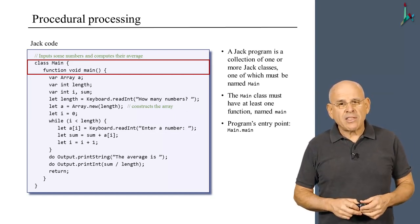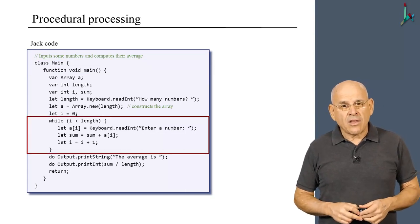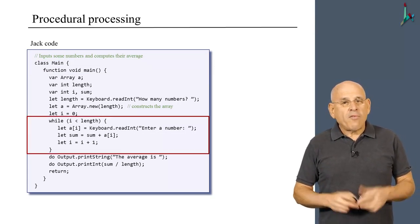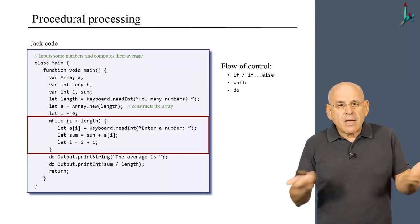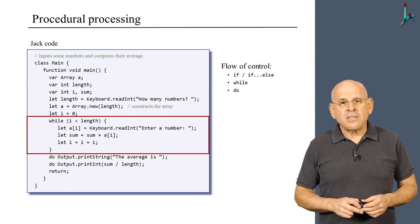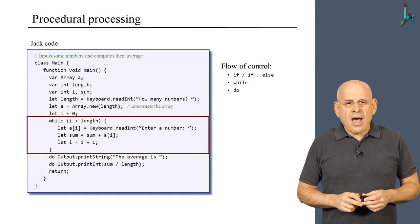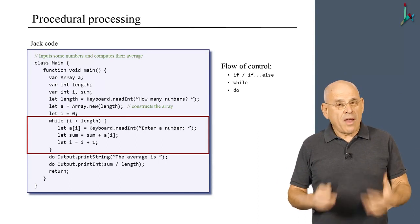All right, moving along, we see that we have control structures. And indeed, the Jack language provides control structures like if, while, and do. And obviously, whenever you want to do something meaningful, you have to use these structures.